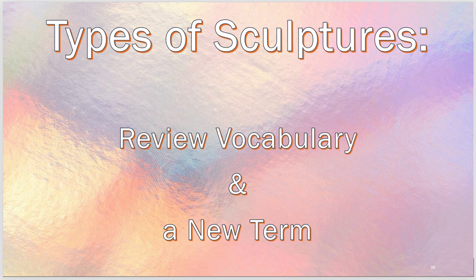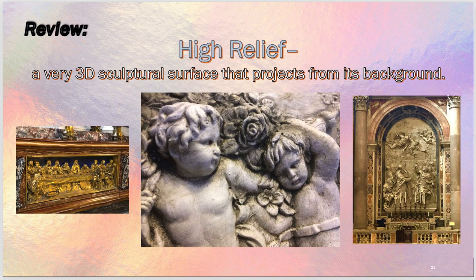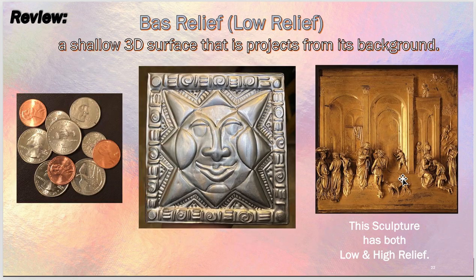Types of sculpture — this is review plus a new term. We have high relief: a very 3D sculpture surface that projects from a background where they're attached to the background. And bas-relief, or low relief: a shallow 3D surface that projects from the background. Here we have coins and our repoussé project, which actually has both bas-relief and high relief.